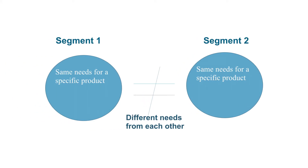For example, segment one shares their needs for a shampoo — all of them want a shampoo that is anti-dandruff. Segment two, on the other hand, buy shampoo for different reasons: they want their hair to be nice and shiny. So although both groups need to buy a hair product, the needs are different. One segment wants anti-dandruff; the other wants shiny hair. Two different segments can never have the same needs — if they do, the way we segmented the market is wrong. All people within a segment must have the same needs, and all people outside the segment have different needs or might not need the product at all.